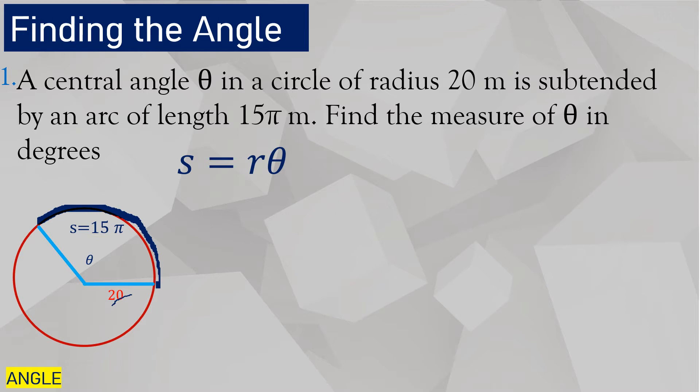Take note that arc length is equal to the product of the radius and theta in radians. So you just need to divide both sides by radius to solve for theta. So theta, or the angle measurement, is equal to S over R.